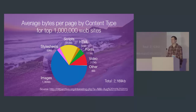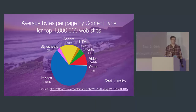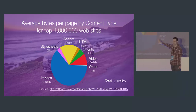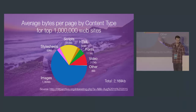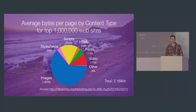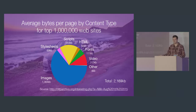If you look at the average number of bytes for the top 1 million websites, images are a pretty guilty culprit — they're taking up over 50% of the resources we're downloading. The next offender is scripts, which is actually quite small compared to images. So images are taking up a lot of our website budget.